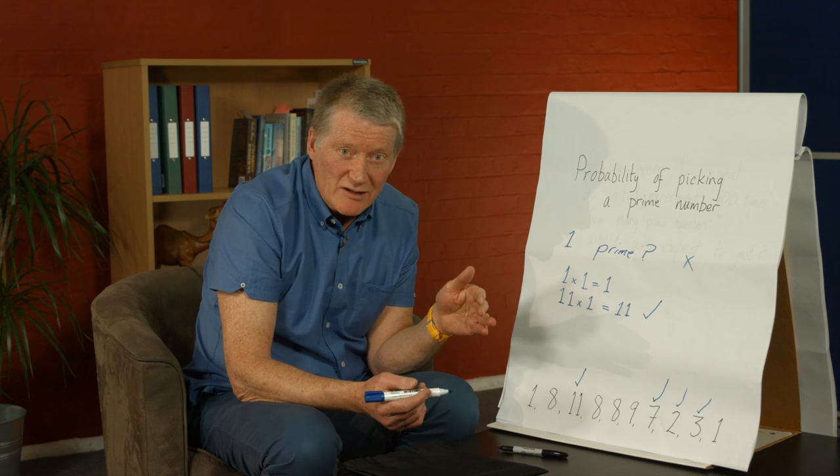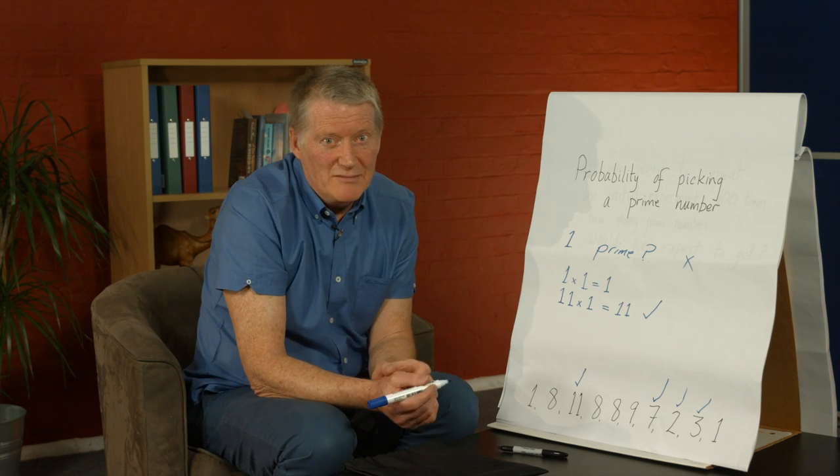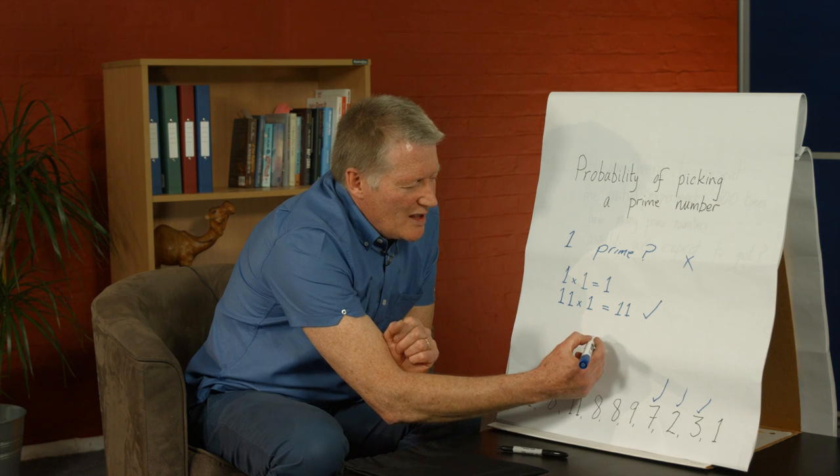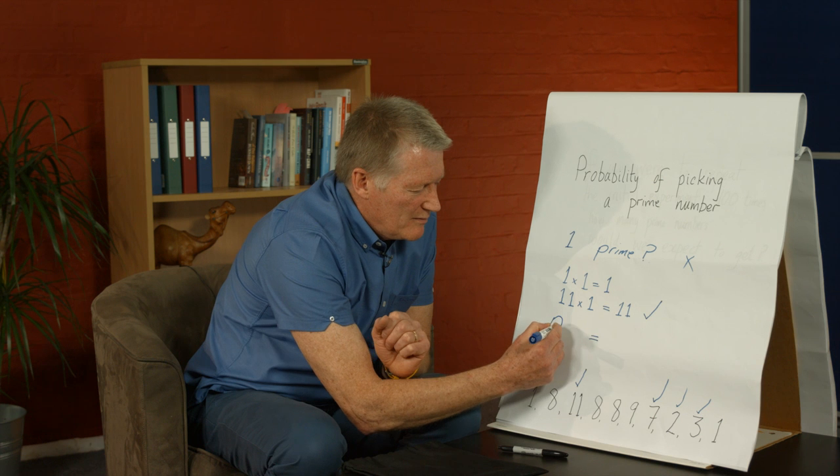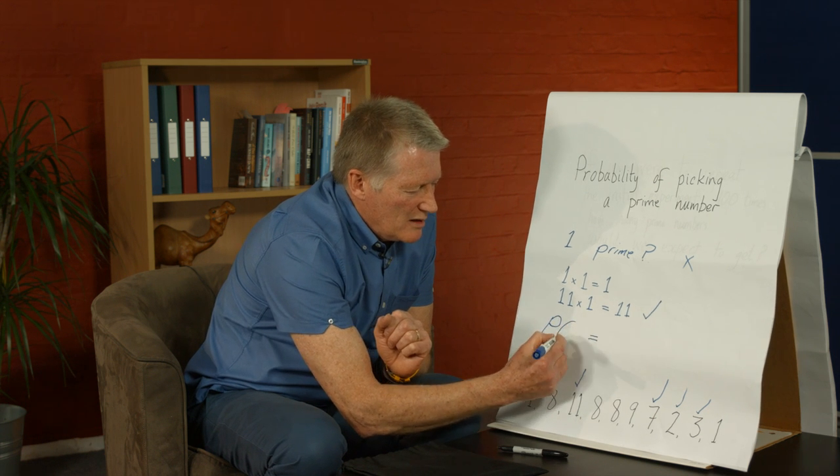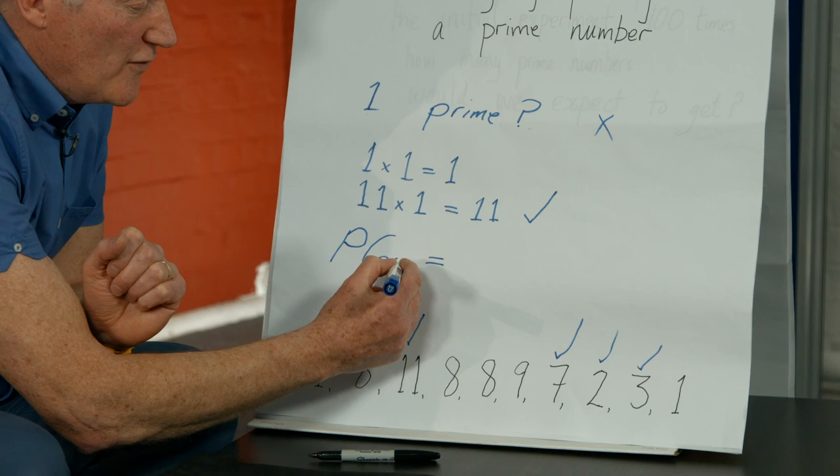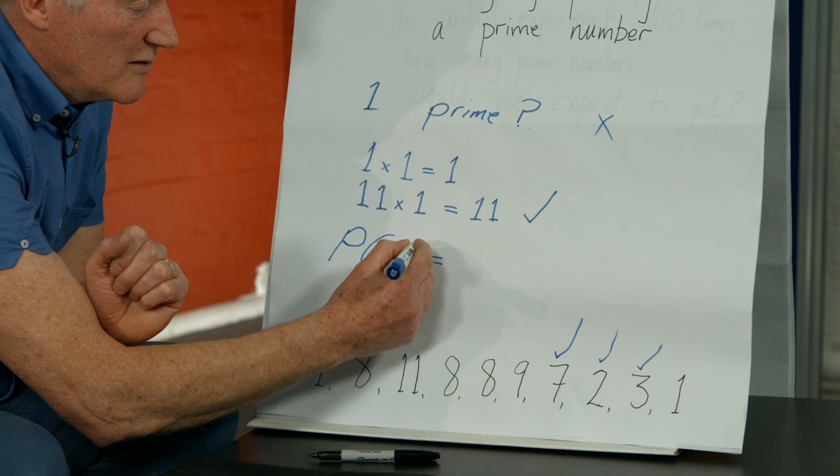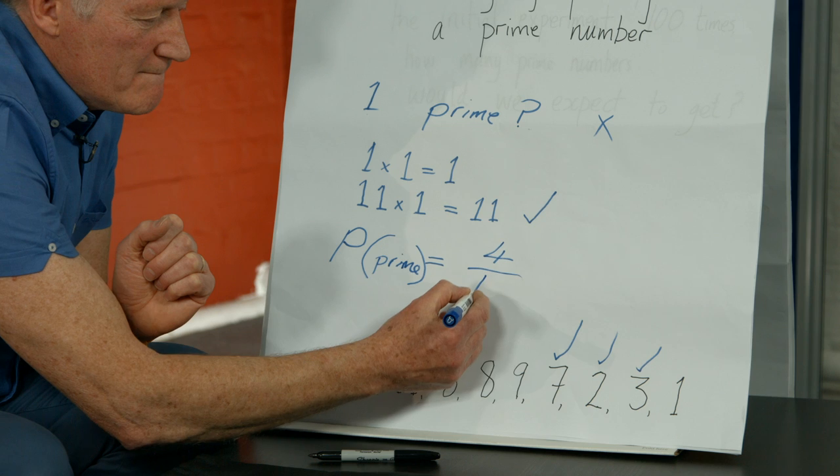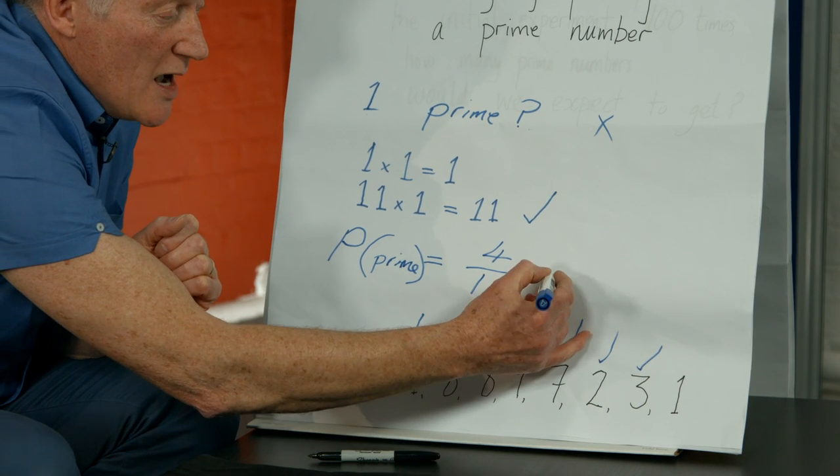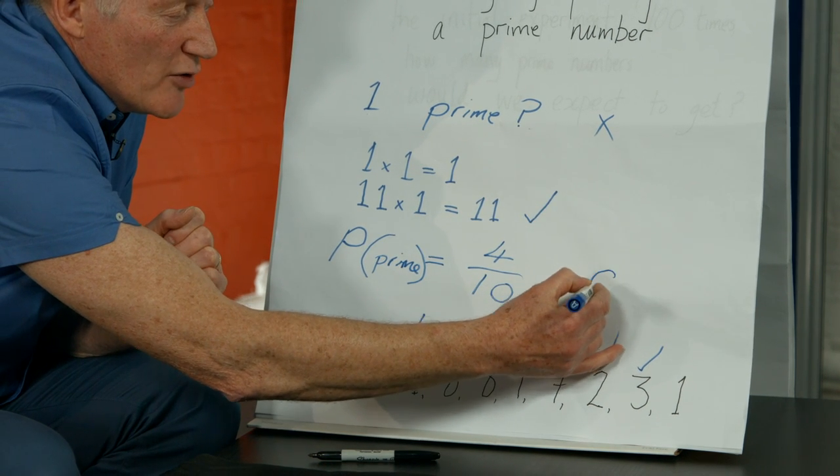So remembering what we did on the last slide, the probability of picking a prime number is 4 out of 10. And that does equal 0.4.